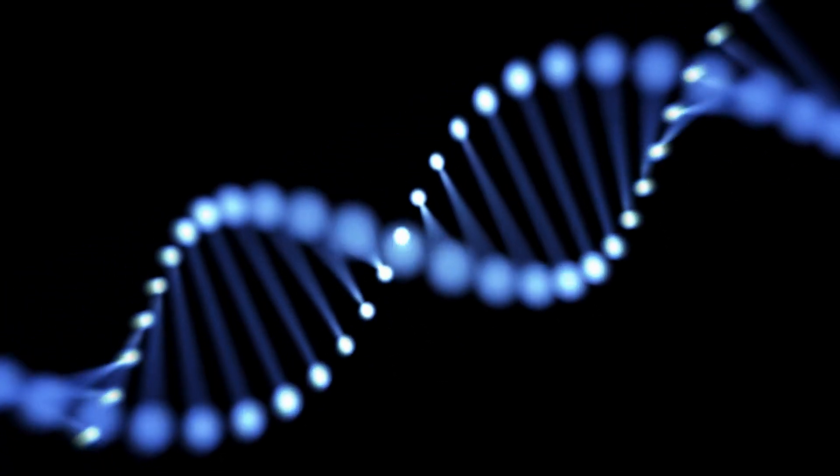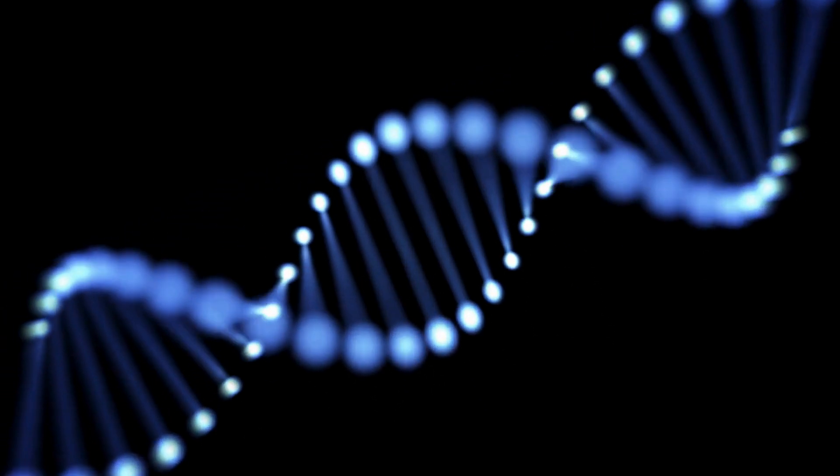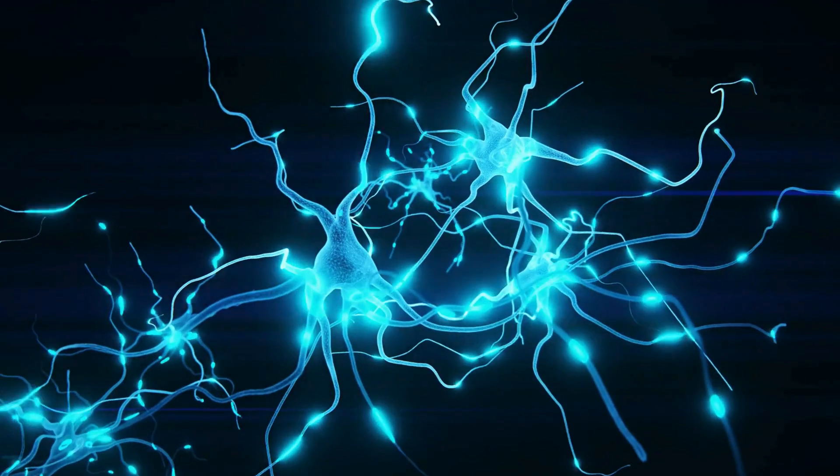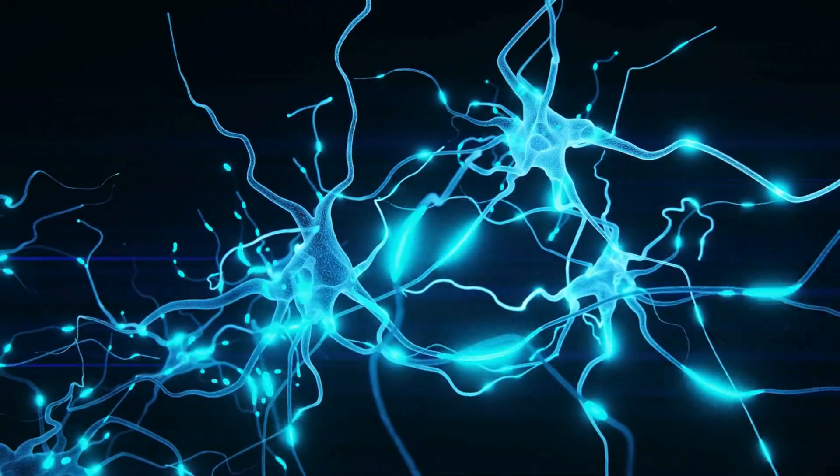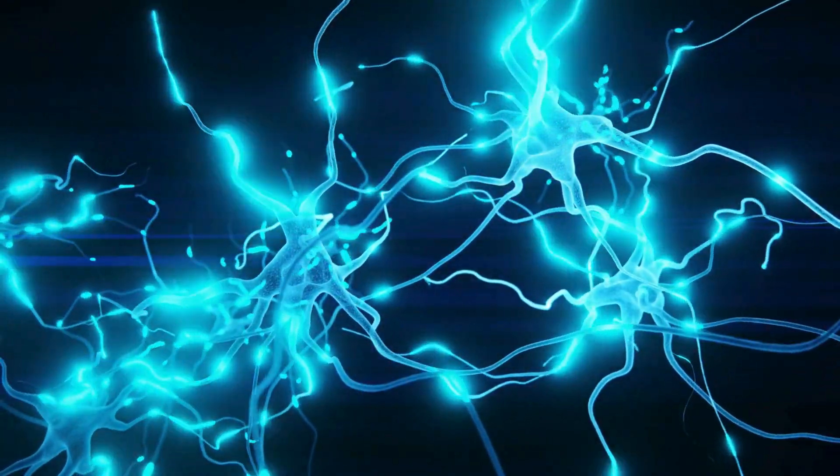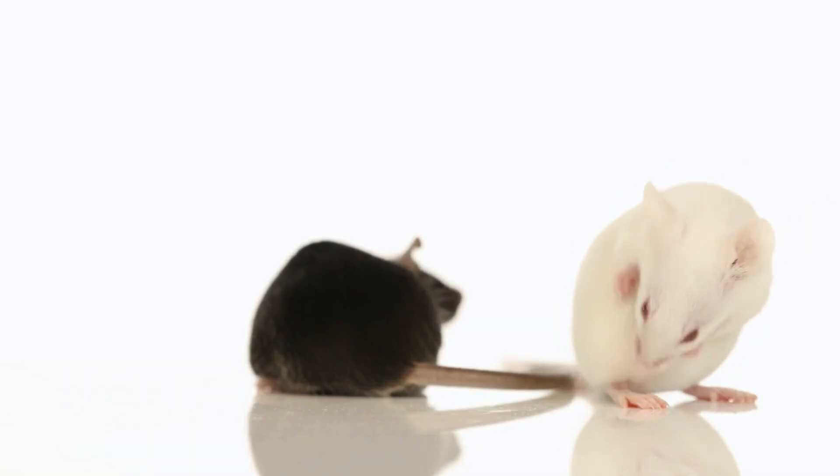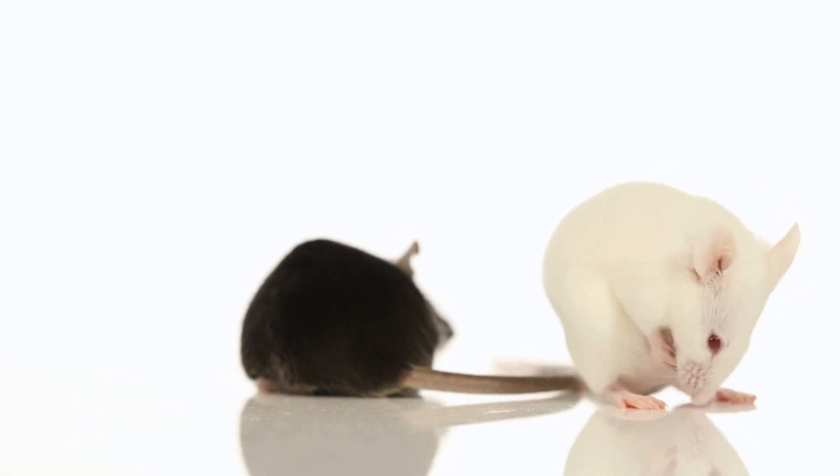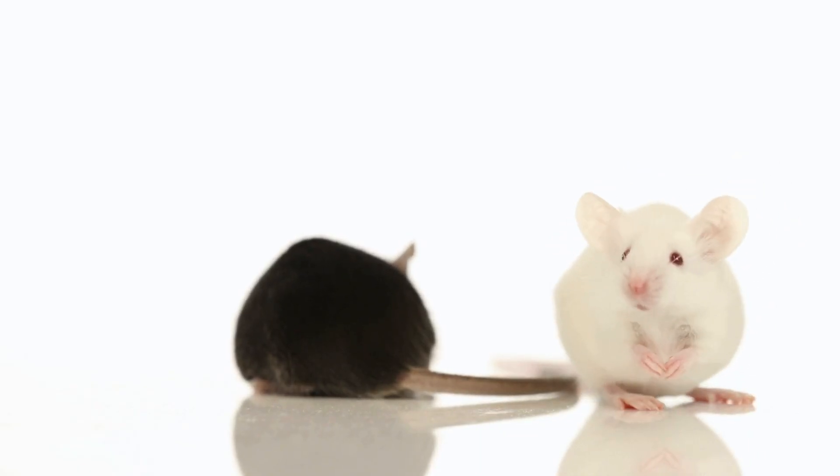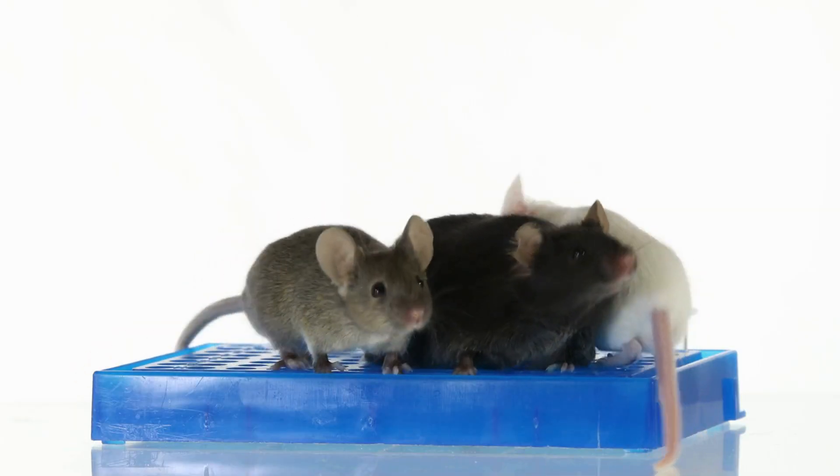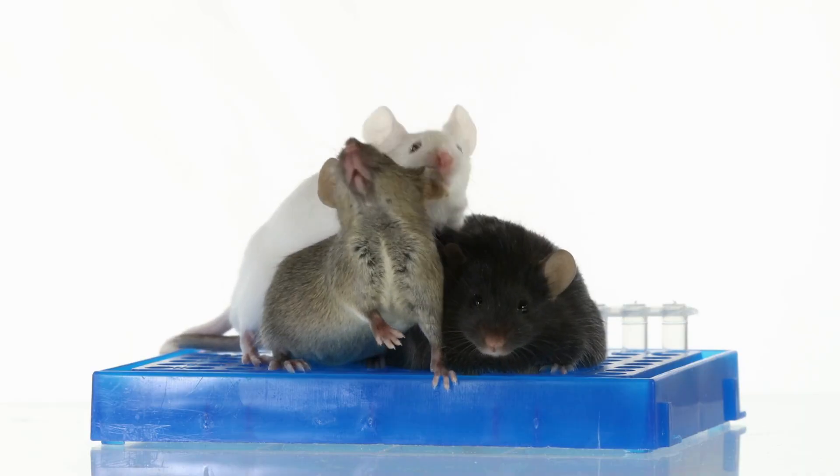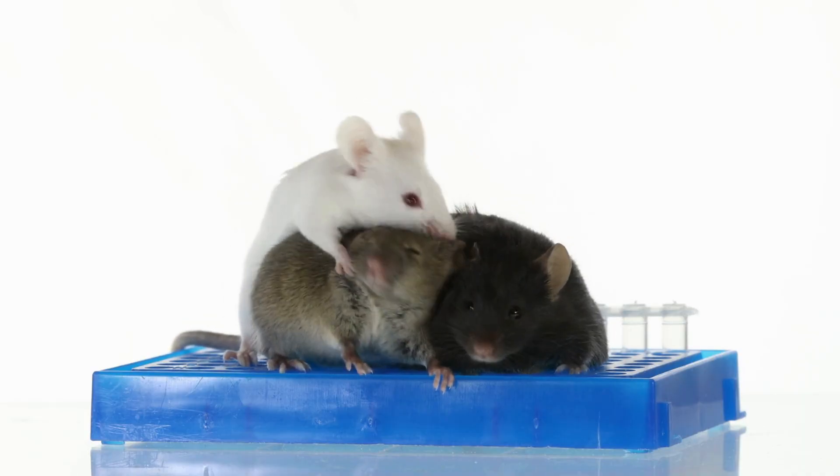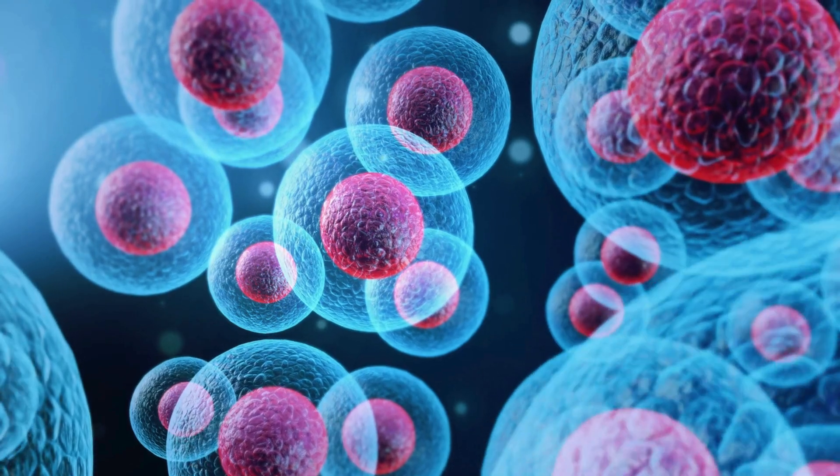That answer came a few years later in 2001 from the labs of Mary Brunkow and Fred Ramsdell. And interestingly, they weren't even initially studying tolerance. No, not directly. They were studying a really devastating genetic disorder in mice called the scurfy mutant. The scurfy mouse. That name sounds almost quaint, doesn't it? It does. But the disease it describes is anything but quaint. This was a fatal, X-linked, recessive lymphoproliferative disorder. Break that down. Lymphoproliferative. It means the lymphocytes, the T-cells specifically, were multiplying uncontrollably.